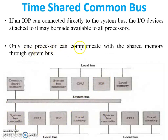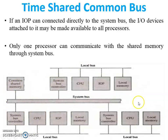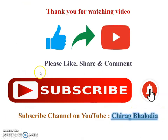Only one processor can communicate with the shared memory through the system bus at a time. When one processor accesses the shared memory, the remaining CPUs or IOPs will be in waiting mode.